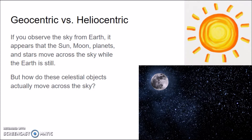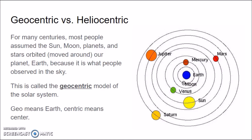Standing outside and looking up at the sky, the Sun, over time, looks like it moves across the sky — and so do the stars, the Moon, and the planets. For many centuries, most people assumed that the Sun, the Moon, the planets, and the stars orbited or moved around our planet, Earth, because that's what people observed in the sky. This is called the geocentric model. Geo means Earth, and centric means center — so people thought Earth was in the center of the solar system.